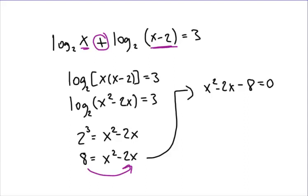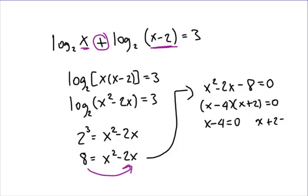Now I solve for x by factoring. This is going to end up being x minus 4 times x plus 2. Set each piece equal to 0, and you end up with x equals 4 and x equals negative 2. These are your potential answers. However, because we're dealing with logarithms, you have to check your answer.